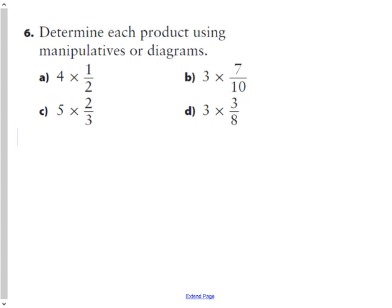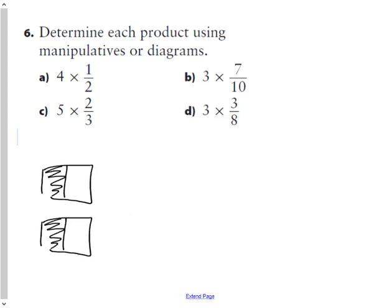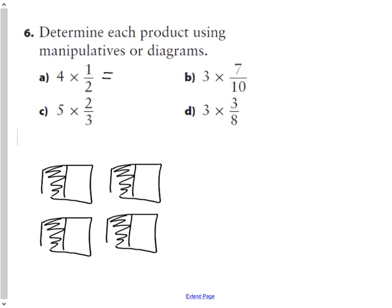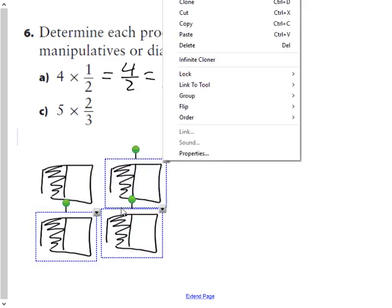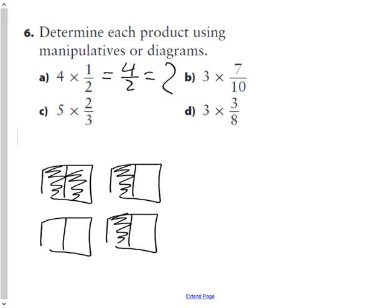Question six asks us to draw diagrams to solve. For part A, four groups of one-half: I draw a half, clone it, and get two halves, three halves, four halves. Four halves written as a fraction is four over two. I can rearrange them to show why four halves equals two — moving the pieces together to form two whole rectangles.